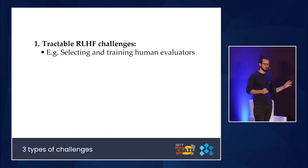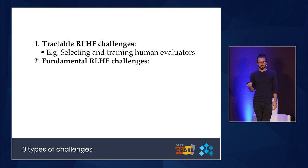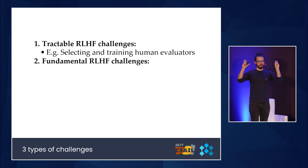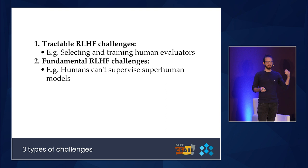Contrast that with fundamental RLHF challenges — things you can't address within the framework of RLHF. Addressing them would require some sort of technique to supplement or replace parts of RLHF. An example is the problem OpenAI pointed out: humans can't supervise superhuman models with any sort of reliability or guarantees. There are ways of trying to get around this problem — like recursive reward modeling or debate — but those take us a little bit outside of the RLHF framework.